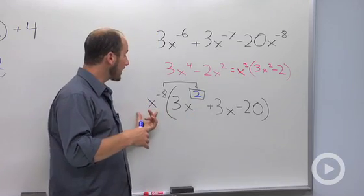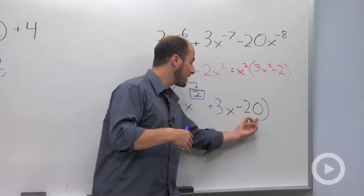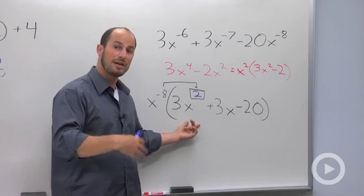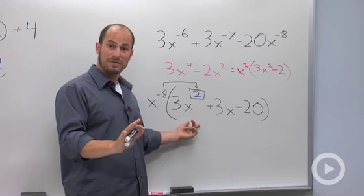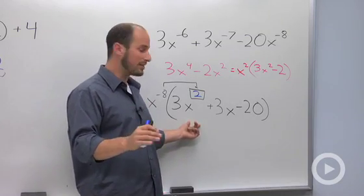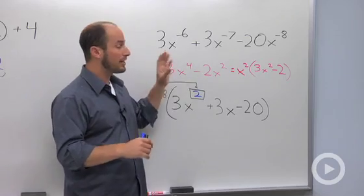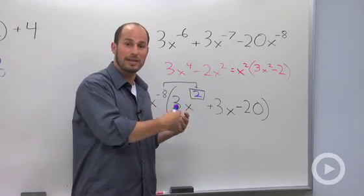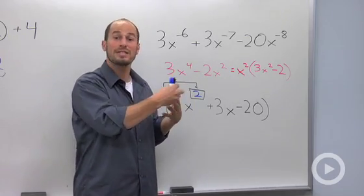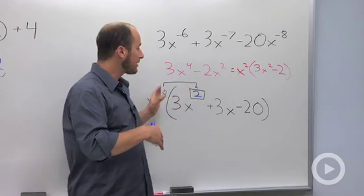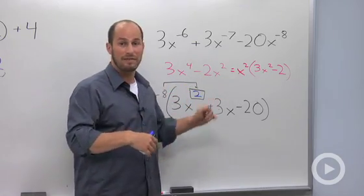Now what we have is we took out this negative term, and we have something we can factor. For our purposes right now, I'm not going to finish this problem. Hopefully you can see how to do that. But what I wanted to talk about is just how you tackle a problem like this. You factor out the largest negative possible, leaving you then with something that you can then factor.